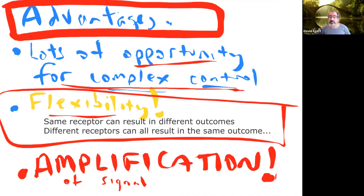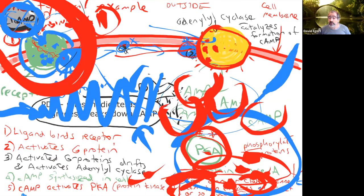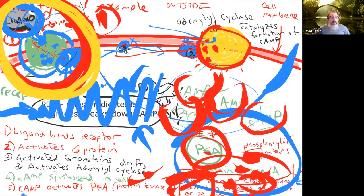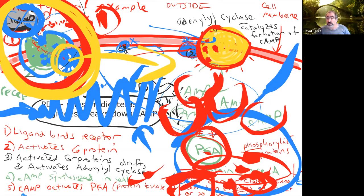Any questions about this? A little later I'll spend more time focusing on what happens when a ligand binds the receptor — what it actually means at a molecular level and how that activates the G protein. For now, this is a nice place to start thinking about second messenger pathways and G proteins. Like cellular respiration, there are lots of steps and each step can have lots of different options.